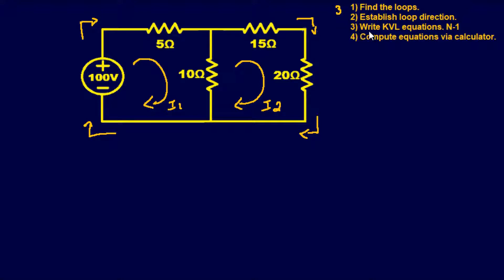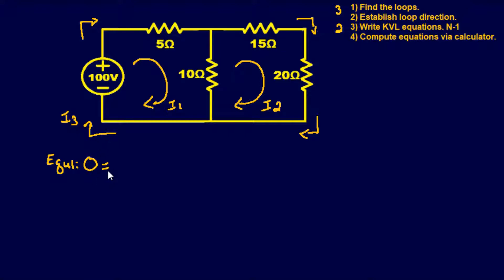Now we write our KVL equations. KVL requires N minus one equations, so with three loops we only need two equations. I'll use I1 and I2. Equation one: starting with zero equals, and looking at the current flow direction, it's going to a negative 100 volts, so we write negative 100 volts. Then plus 5Ω times I1.